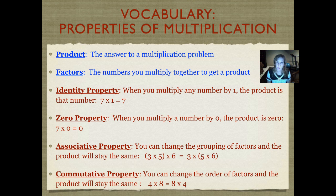The next property is the zero property. This is when we multiply a number by zero, the product will always be zero. Seven times zero equals zero. Four hundred thirty-two times zero equals zero. A million times zero will equal zero.